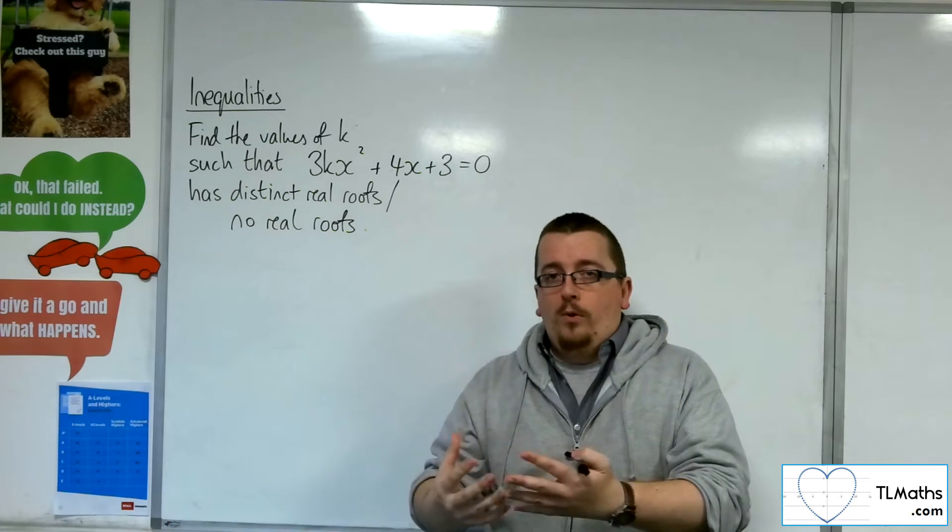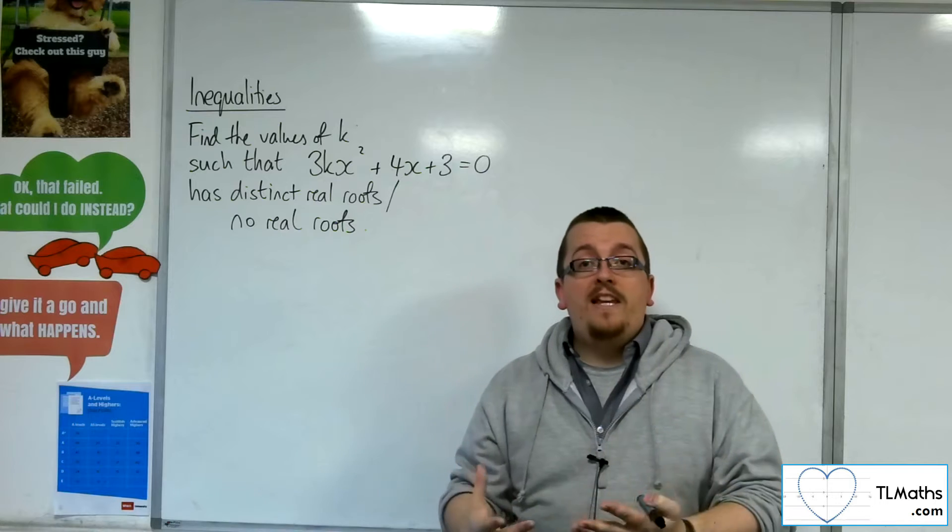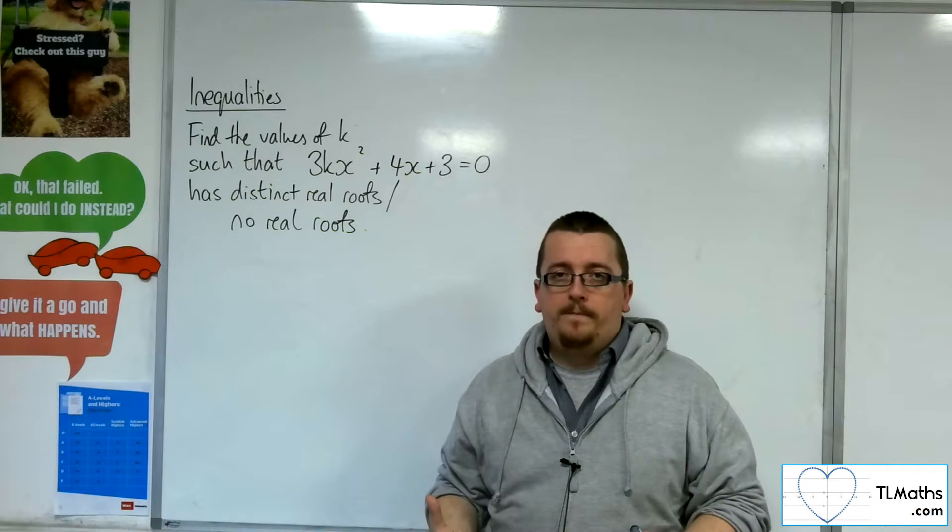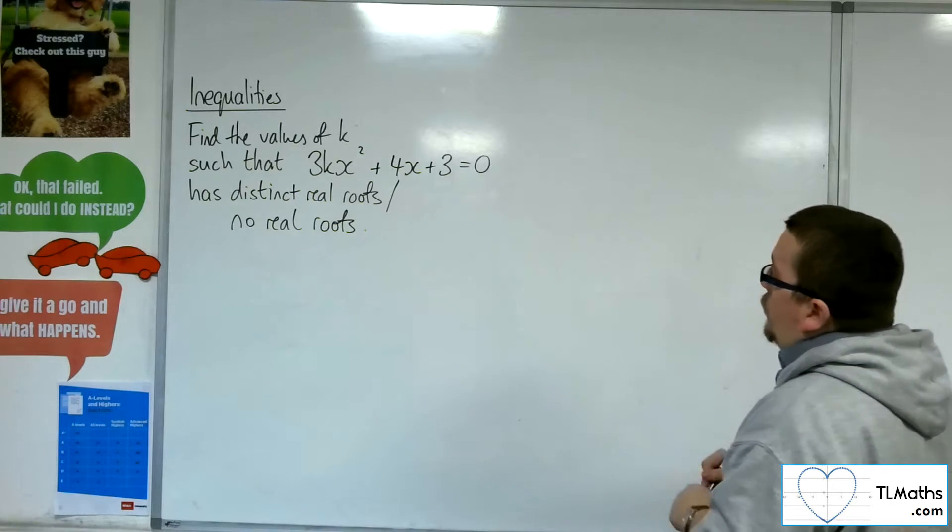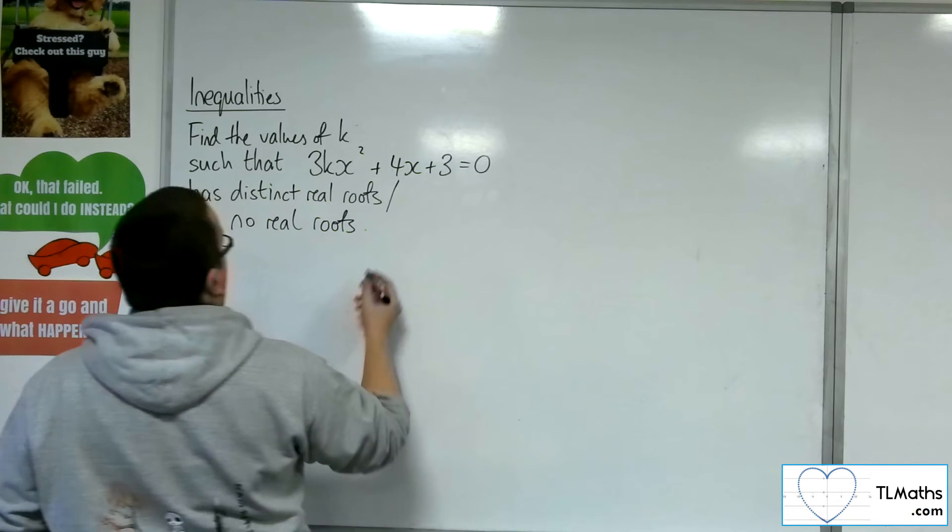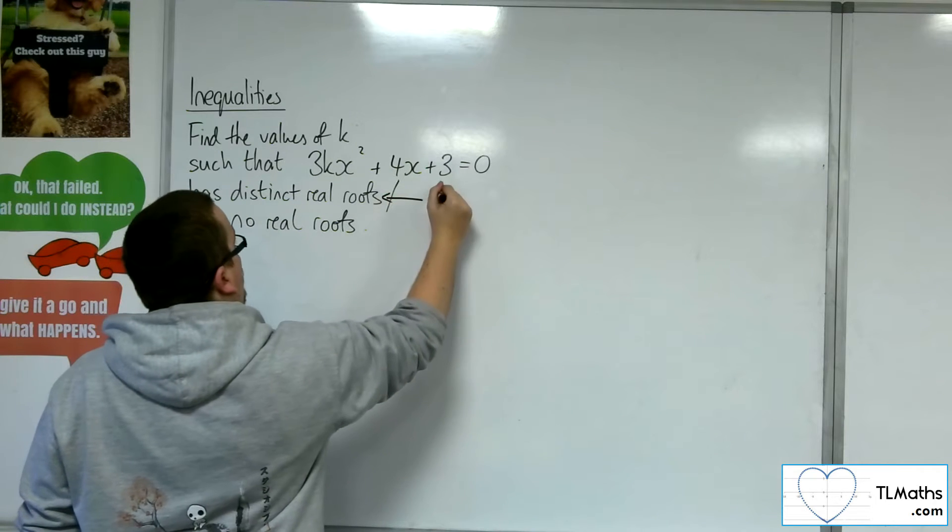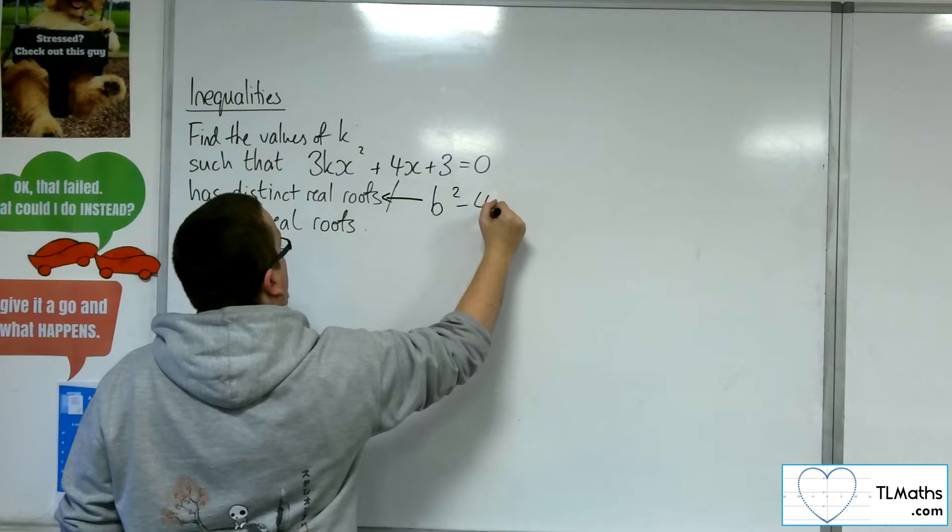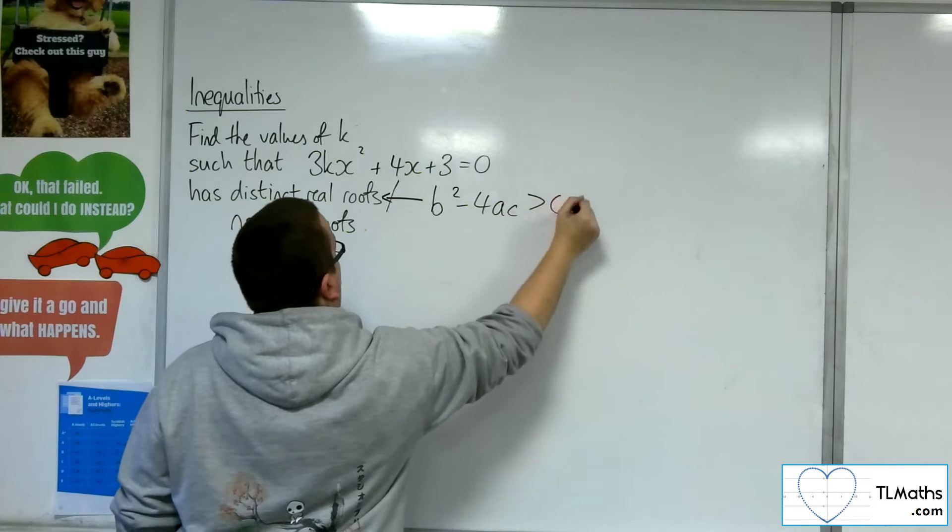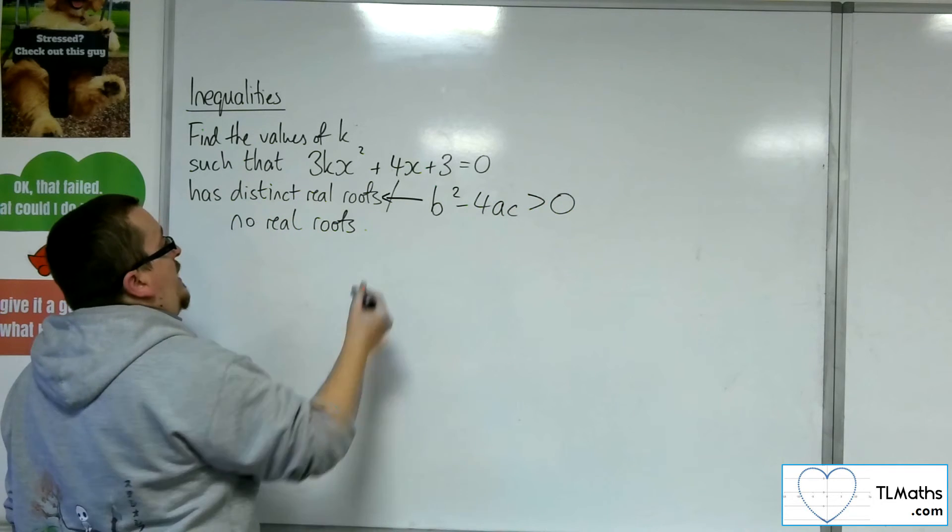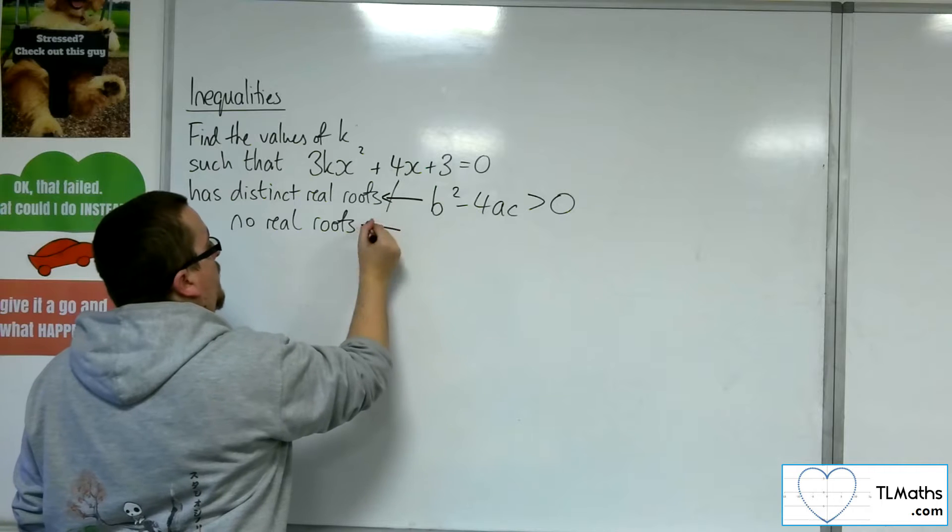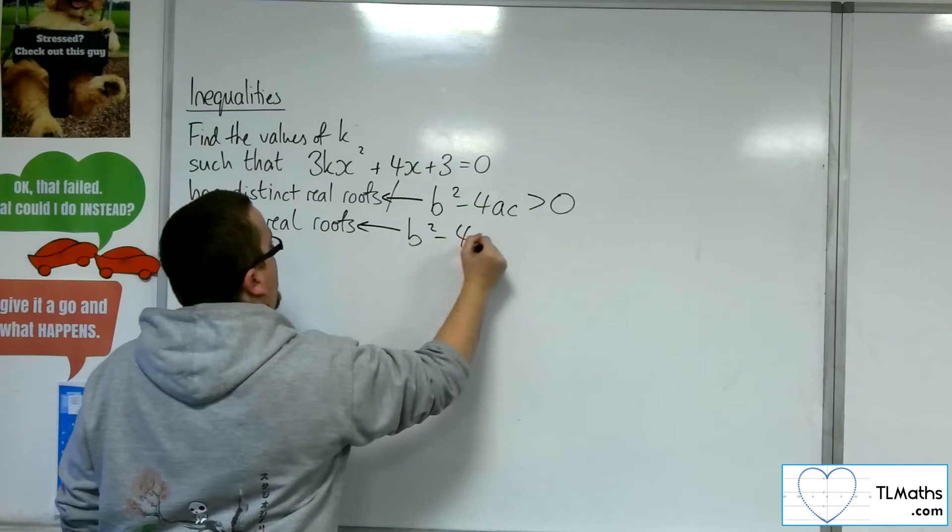And this all hinges on the value of the discriminant. So if you're looking for distinct real roots, then you're looking at the discriminant being positive. And if you're looking at no real roots, then the discriminant will be negative.